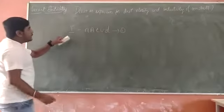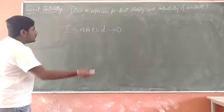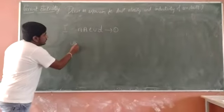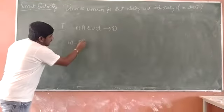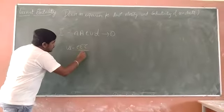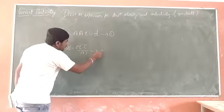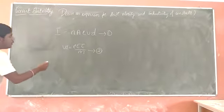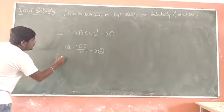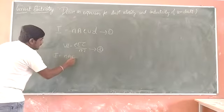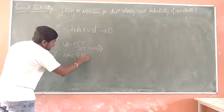Because we know that current is equal to NAAV, if the drift velocity is NAAV. Drift velocity is EETAV. Substituting the value of drift velocity in equation 1, what we will do is i is equal to NAAV. Drift velocity is EETAV.